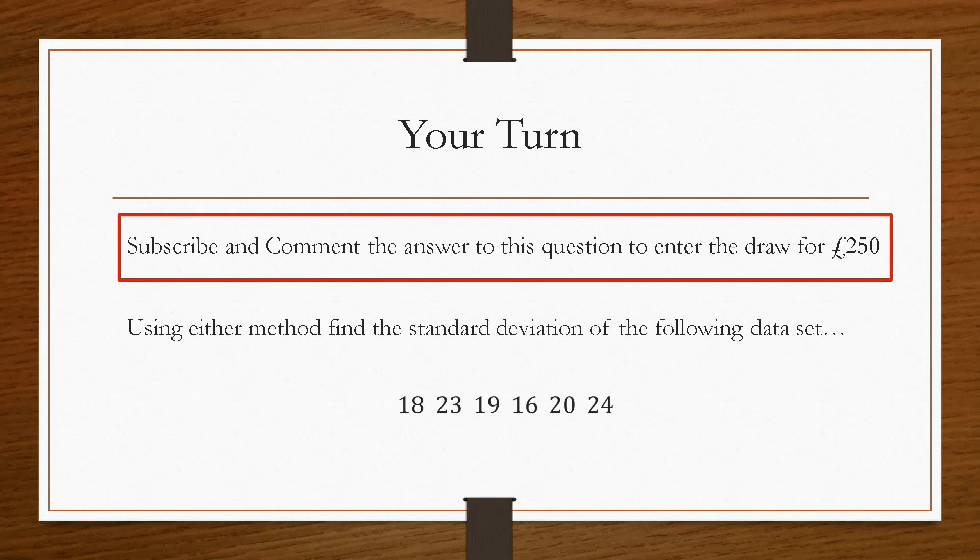So now it is your turn. In order to qualify for the £250 prize giveaway each month, all you have to do is subscribe to the channel and answer the following question correctly, and comment your answer in the comment section below. So only valid subscribers with the correct answer will be entered into the draw. So this question here is using either method, it doesn't matter, method 1, method 2, you could use both to check that you get the same answer, is to find the standard deviation of this set of data. Now again, just like the example, this data doesn't mean anything, it is just a series of random numbers.